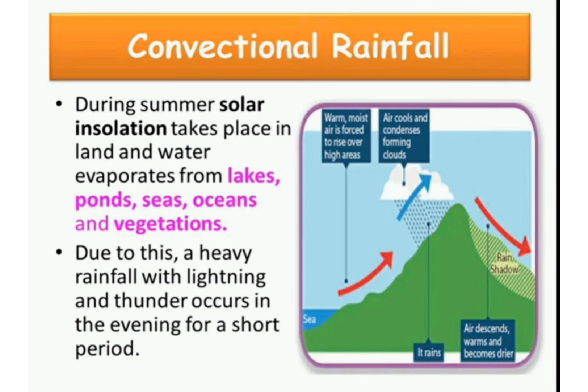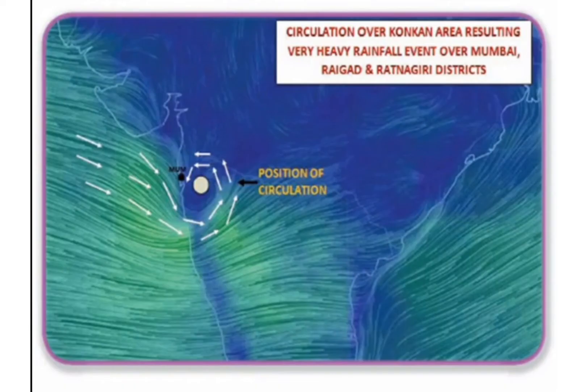A thunder is a sound caused by lightning. Lightning is a giant spark of electricity in the atmosphere between the clouds, the air or the ground. In the picture, you can see the circulation of air in the Konkan area resulting in very heavy rainfall in Mumbai, Raigad and Ratnagiri districts. Because of the eastern ghats acting as a barrier, the circulation cannot escape and moves northward, giving more rain to Mumbai and Raigad.